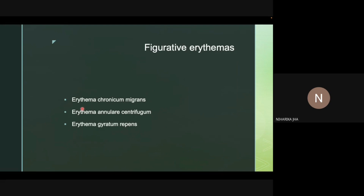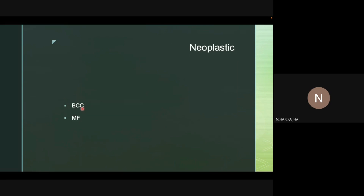Figurate erythemas include several types. The three important ones are: erythema chronicum migrans — associated with Lyme's disease — erythema annulare centrifugum, and erythema gyratum repens. Erythema chronicum migrans is the most commonly seen figurate erythema and is a skin finding seen in the early stages of borreliosis.